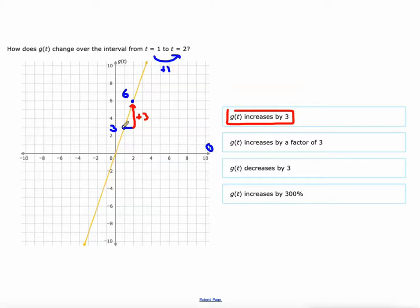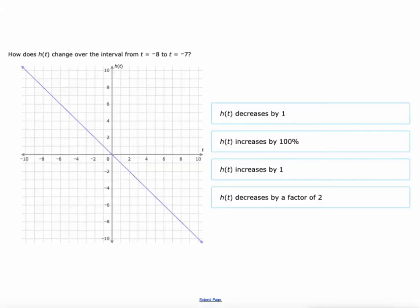All right, by a factor of 3, no, we didn't multiply 3 by 3 to get 9. That's not true. Definitely didn't decrease by 3. An increase of 300% would mean that an increase of 100% would take it to 6 and another 100% would take it to 9 and another 100% would take it to 12. So it's definitely not percents. So don't overthink this here.